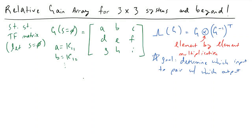Hey guys, Vincent here. In this video we are going to be calculating the relative gain array for higher order systems in which we have perhaps three inputs and three outputs, or four inputs and four outputs and so on. These types of examples are a lot more complicated than the two-by-two example we had previously because there's a lot more linear algebra involved. If you're doing this in practice, I would strongly recommend using MATLAB or Excel so that computers calculate this for you, making catastrophic mistakes much less likely.